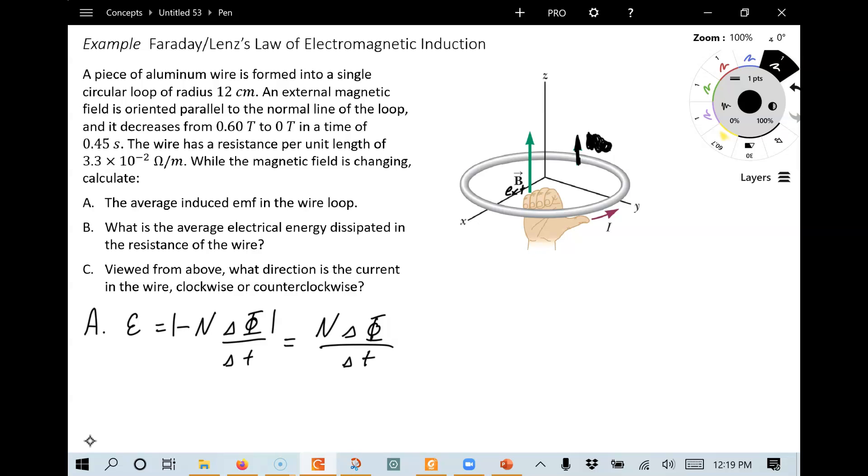And in this case, our loop is just equal to 1. So it all comes down to calculating the change in the magnetic flux through the loop divided by the time period. Alright, so really the key focus here is on determining the change in magnetic flux.